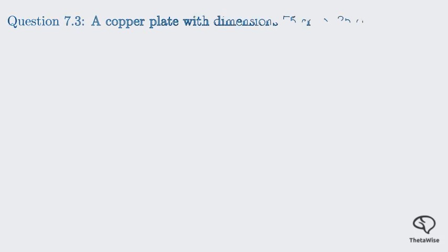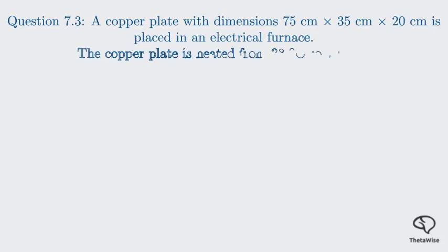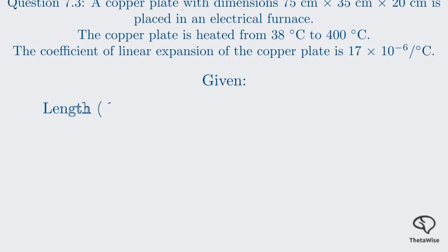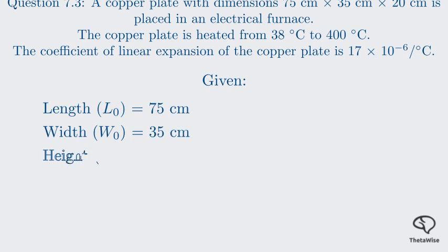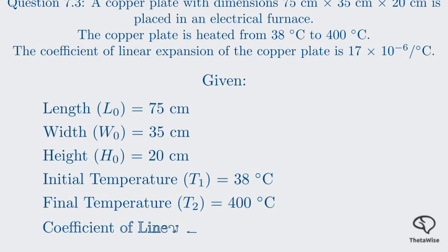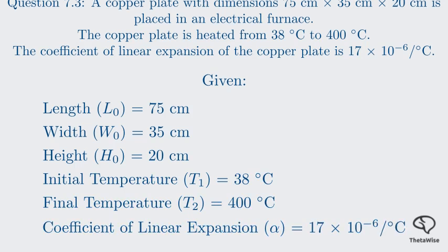Now we move on to question 7.3, a multi-part calculation problem involving thermal expansion. Before we start calculating, it's always a good idea to extract and list all the given data. We have: initial length L₀ = 75 cm, initial width = 35 cm, initial height = 20 cm, initial temperature T₁ = 38°C, final temperature T₂ = 400°C, and the coefficient of linear expansion alpha = 17 × 10⁻⁶ per degree Celsius.